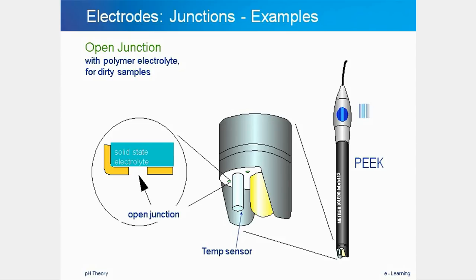A third option is the open junction, which has no barrier between the inside and outside of the reference element. This is only possible if the inside of the electrode contains a solid polymer electrolyte, which controls the flow of electrolyte during measurement so no complete loss of electrolyte takes place. The InLab 430 electrode is shown with its open junction at the bottom next to the glass membrane sensing part. The temperature sensor also sticks out of the bottom right next to the pH membrane. The polymer solid state electrolyte is in direct contact with the solution and exchanges ions to maintain a stable reference potential. This junction is usually used for very dirty samples like soil suspensions.